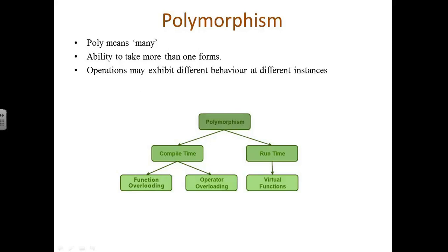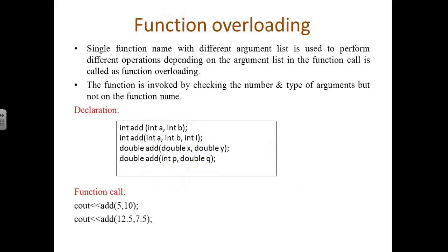So compile time polymorphism is classified into two types: function overloading and operator overloading. And this operator overloading can be further classified into two types: unary operator overloading and binary operator overloading. In today's class we are going to discuss function overloading and a small introduction about operator overloading. Runtime polymorphism is called virtual functions.